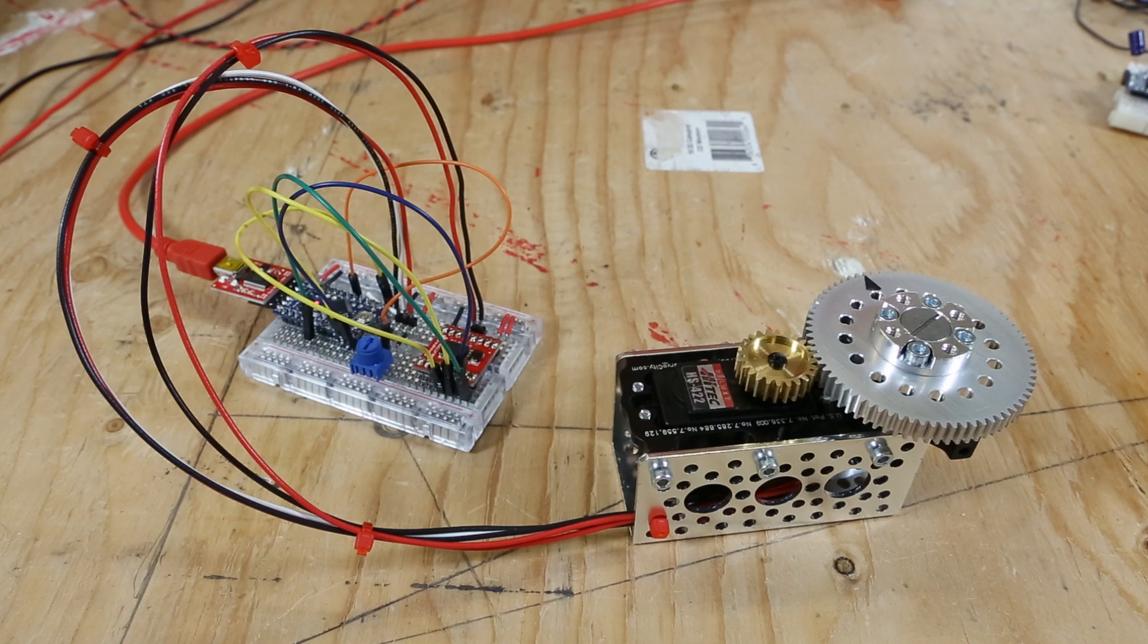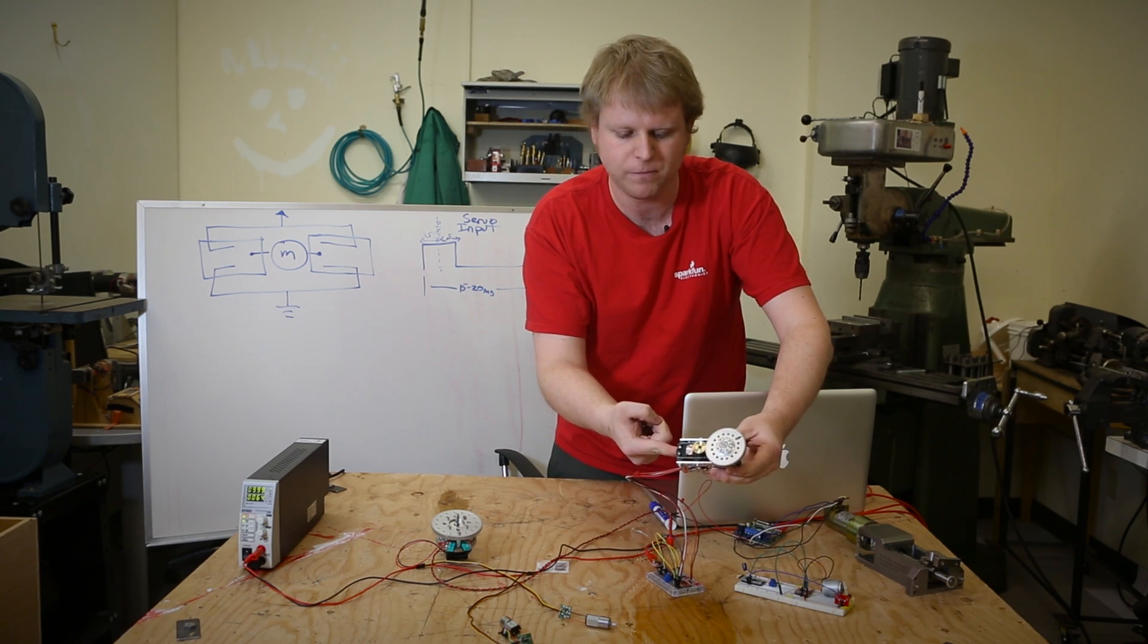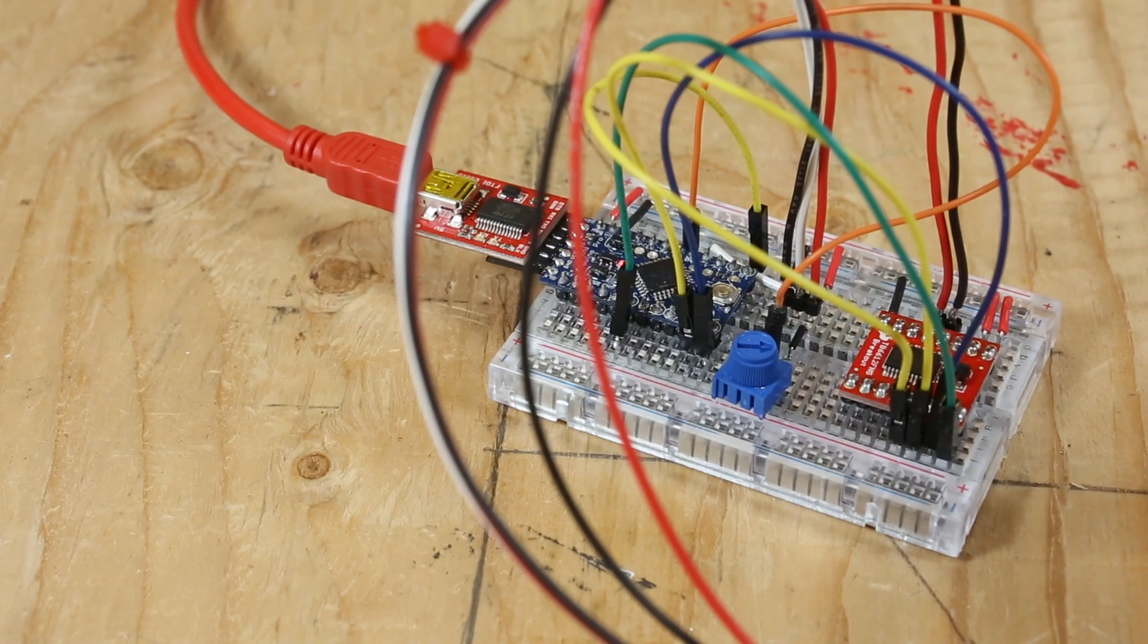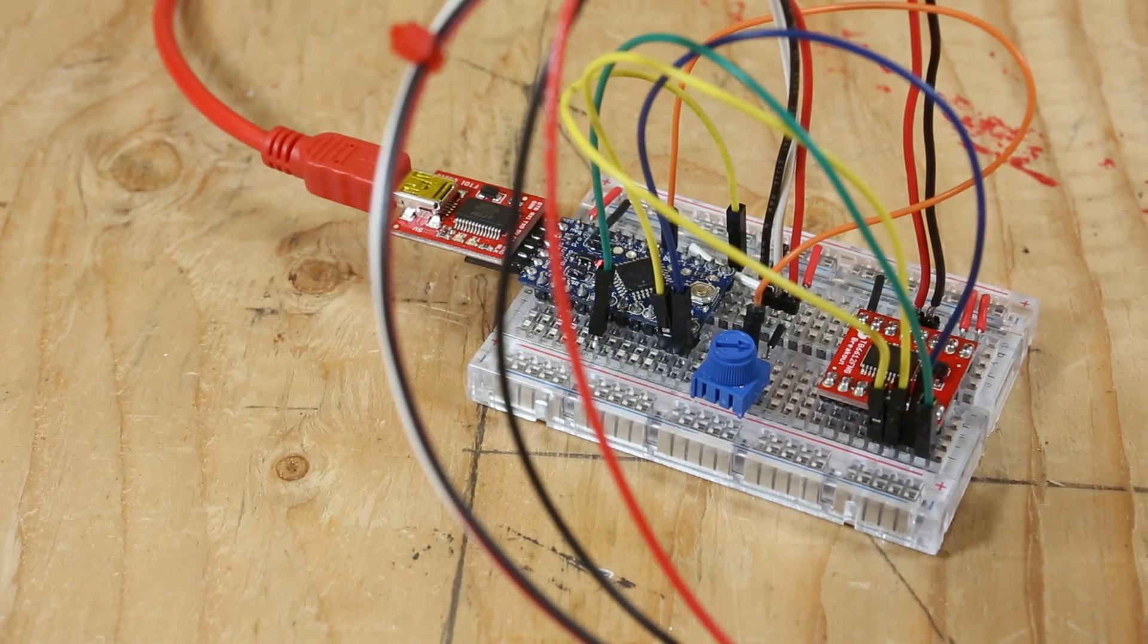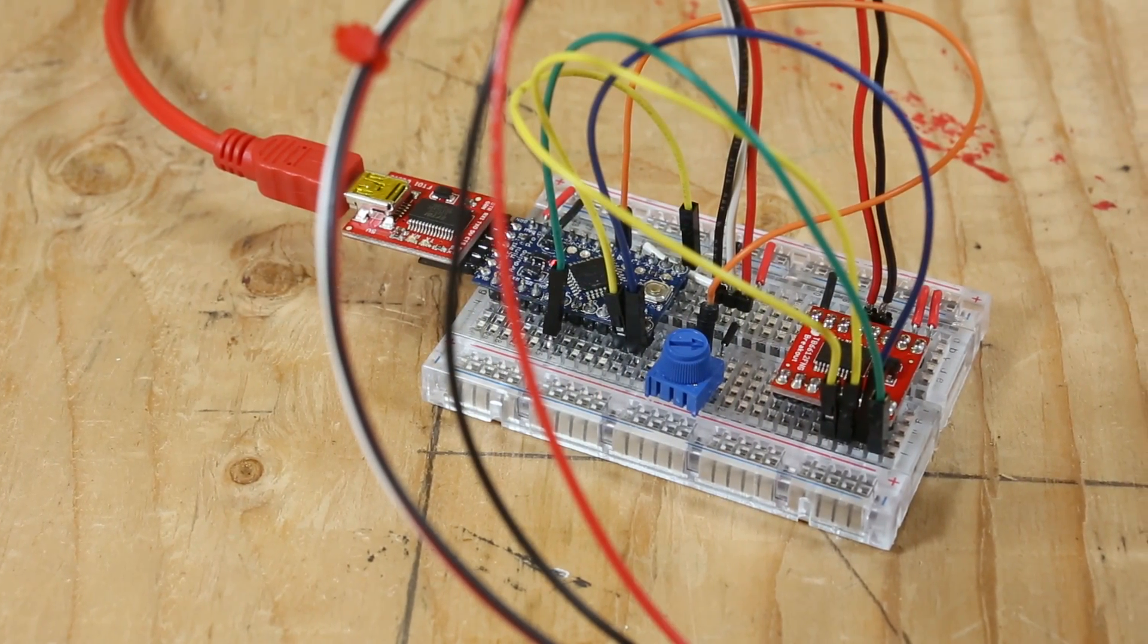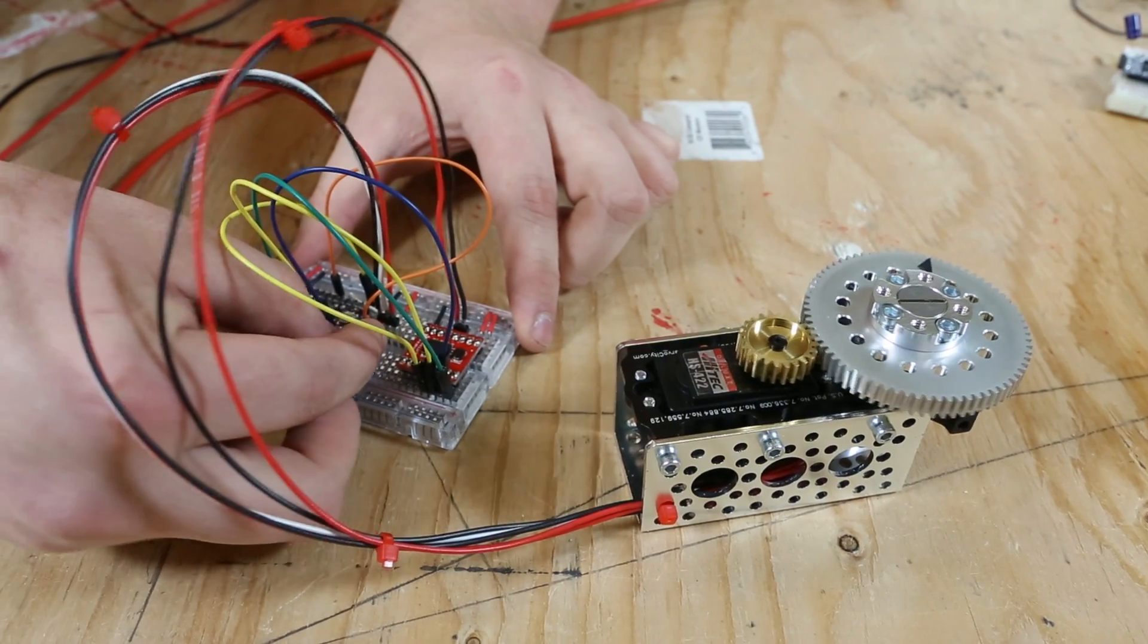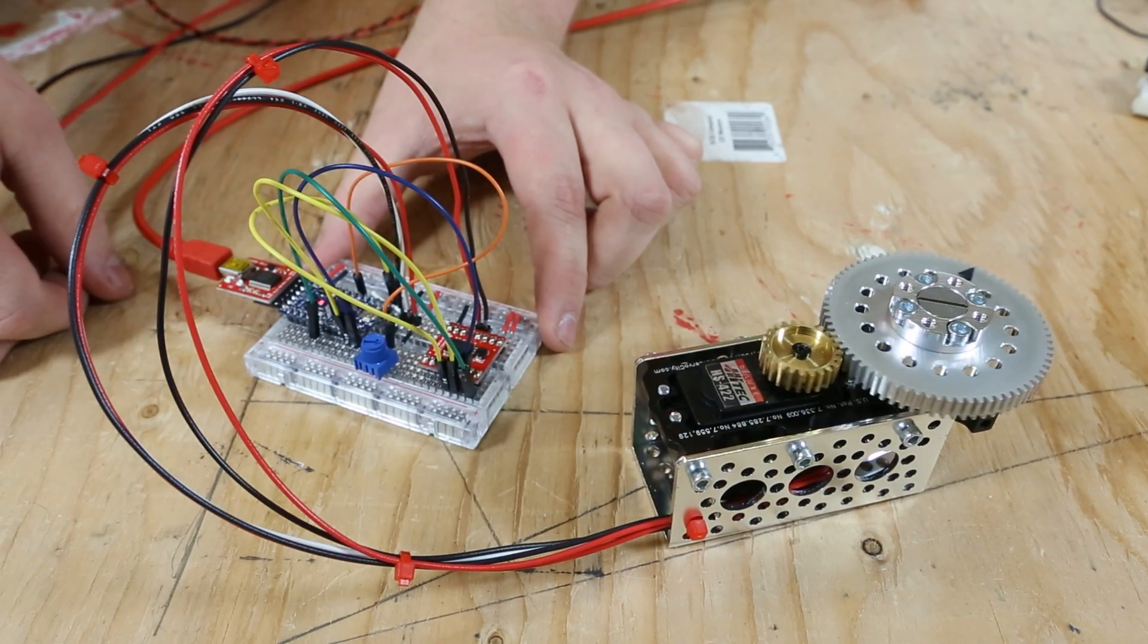To take that a step further and really show you what's going on, I've created an Arduino-based servo. I've pulled the guts out of this servo and taken the motor leads into a motor controller, and I've pulled the potentiometer leads back into the microcontroller. So I'm doing the exact same thing that the high-tech servo would be doing, but on a micro. As I turn the potentiometer for the direction where I want it to go, it slowly moves the servo back and forth.